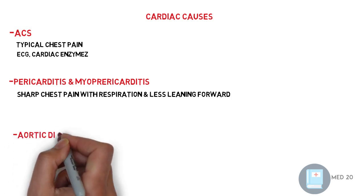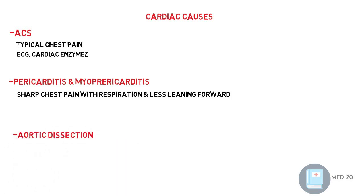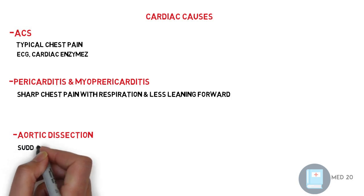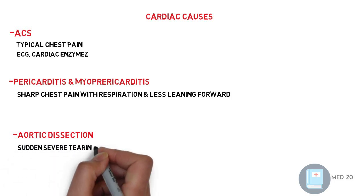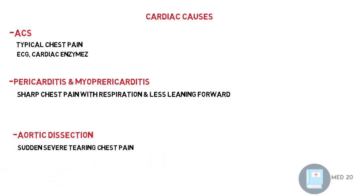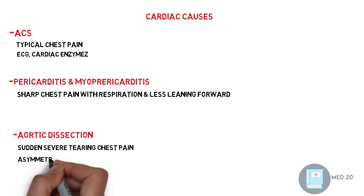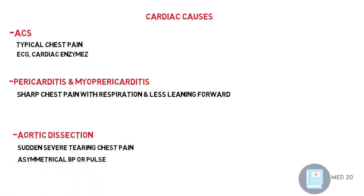Aortic dissection, which is sudden, severe, tearing chest pain that usually comes in older people and radiates to the back. There is asymmetry in blood pressure and pulse, and sometimes comes with focal neurological abnormality. It needs CT, MRI, or echo in some cases to diagnose.